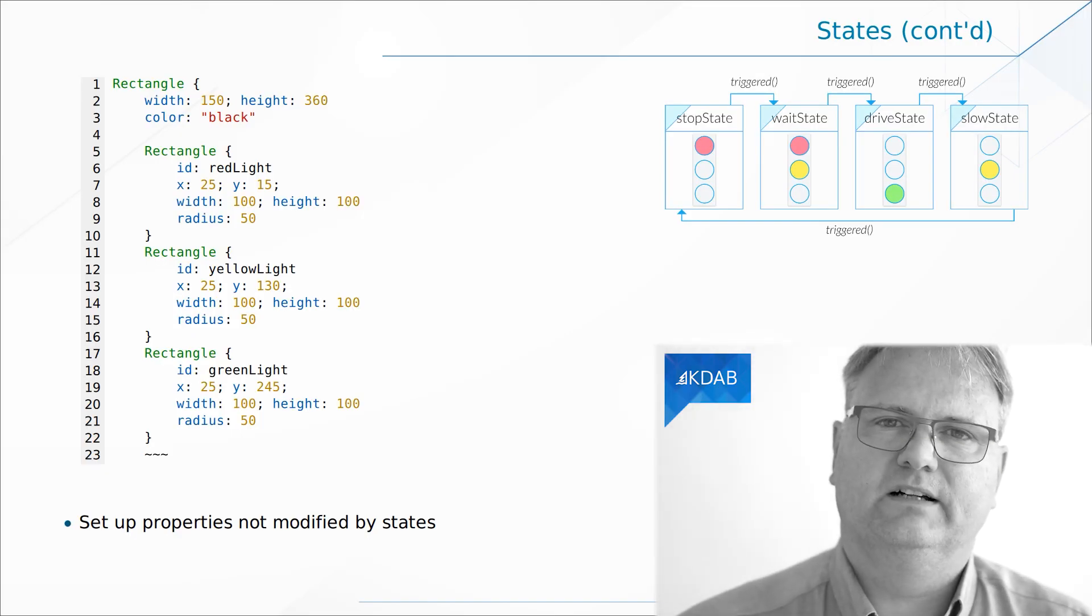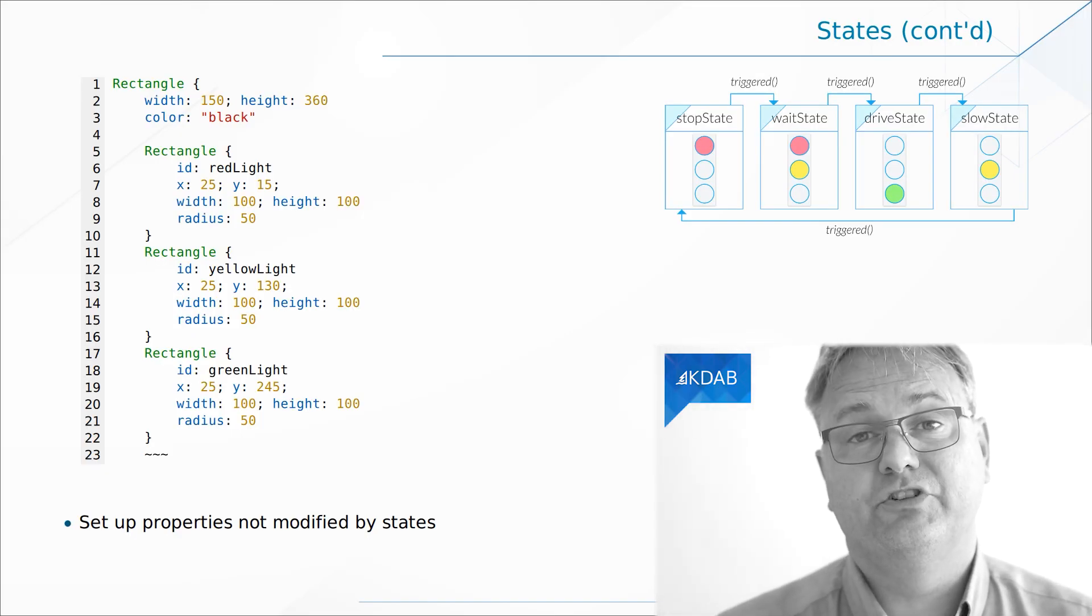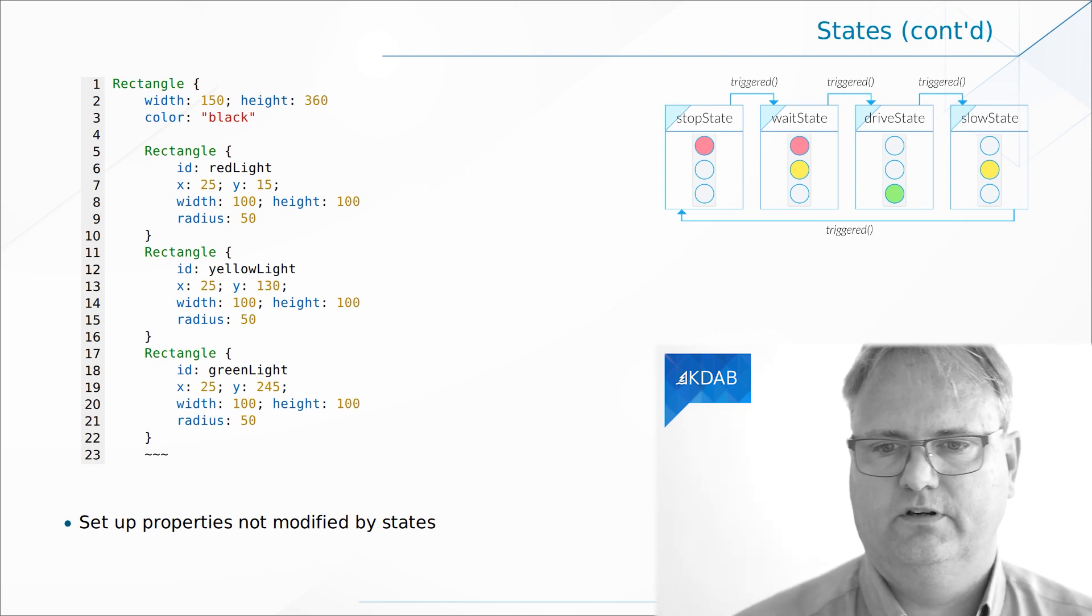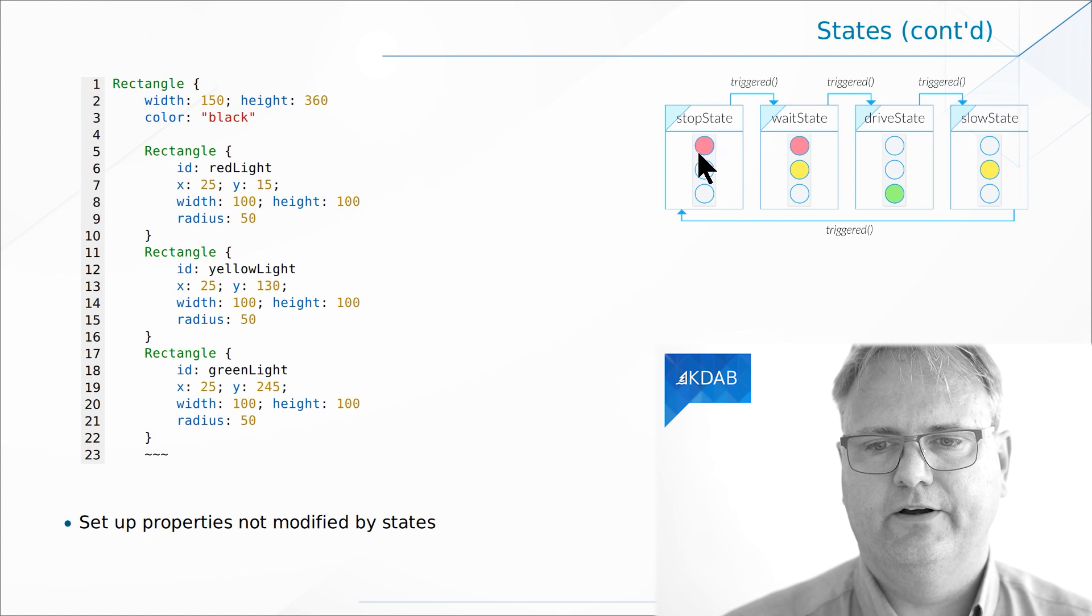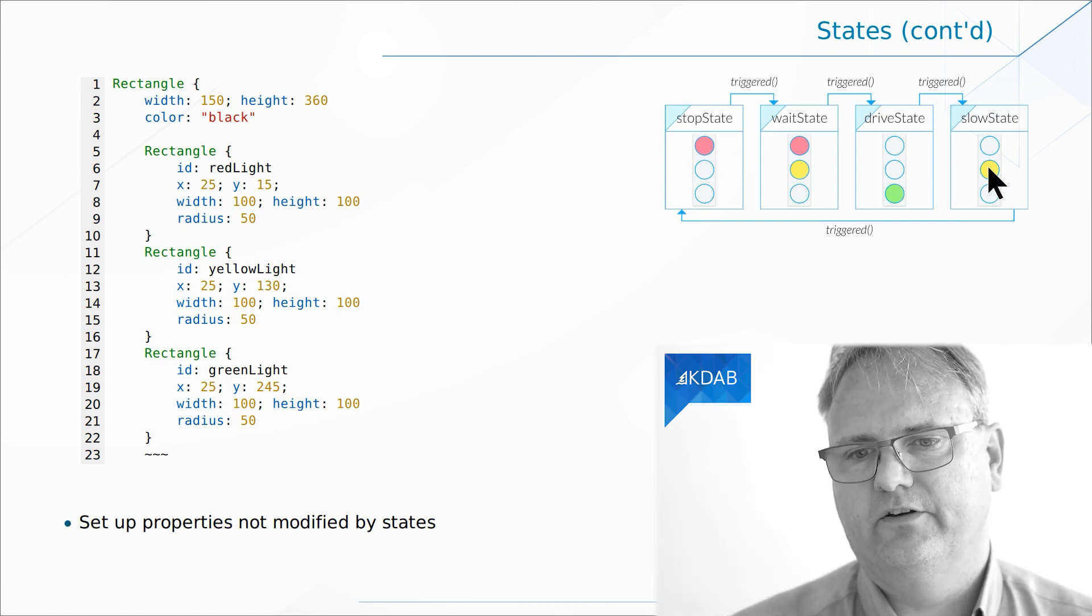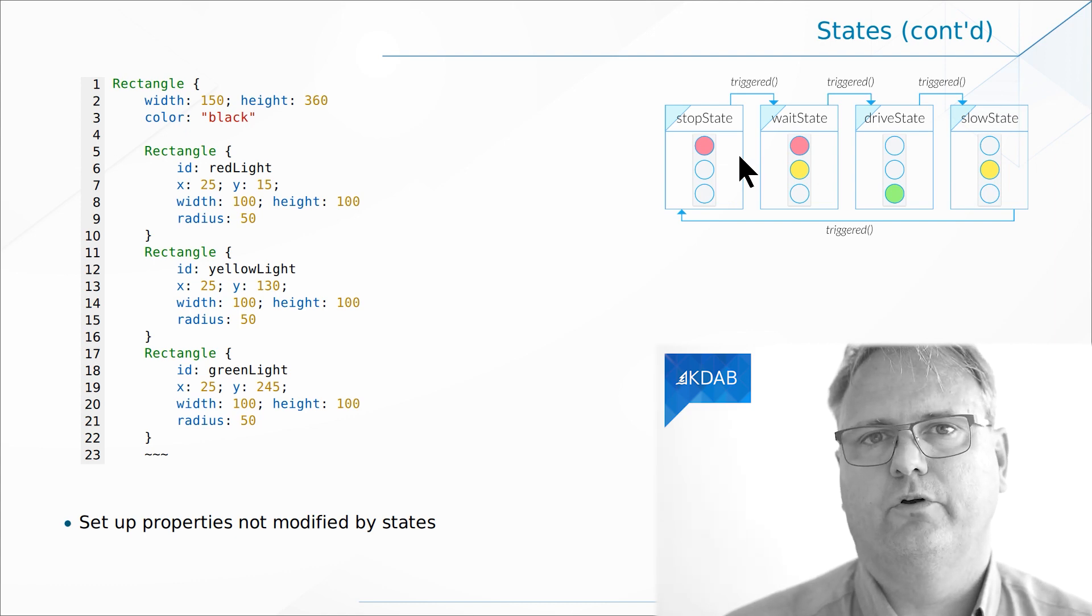I got a state machine here. Well, it lacks the machine part of a state machine, but I got a bunch of states and transitions between those states. It's your typical stoplight here, going from red to red-yellow, over to green, back to yellow, and back to red. And there's a full circle.